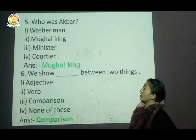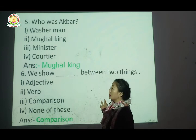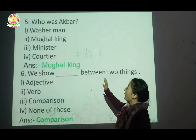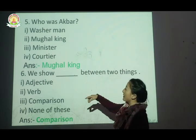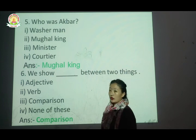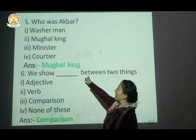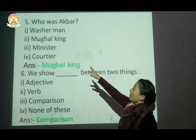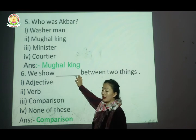The next question is: Who was Akbar? Options are: a waterman, a Mughal king, a minister, or a courtier. The correct answer is Mughal king — Akbar was a Mughal king.